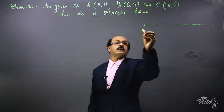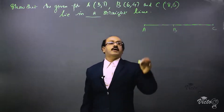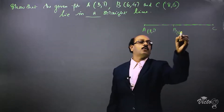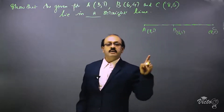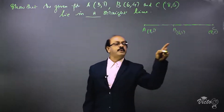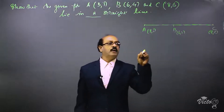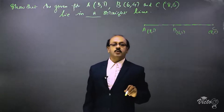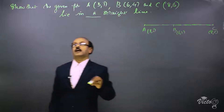If there are three points A, B, and C — with coordinates A(3,1), B(6,4), and C(8,6) — and if A, B, and C are in a straight line, then the length of AB plus BC should be equal to the length of AC. We have to find the lengths of AB, BC, and AC and check whether AB + BC = AC.